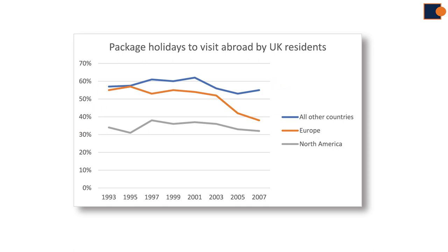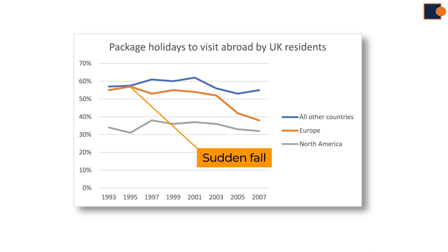In this example, all countries in North America had fluctuation — going up and down over the period — while Europe had a fall. The last key feature can be unusual trends, like the sudden fall in Europe around 1996.